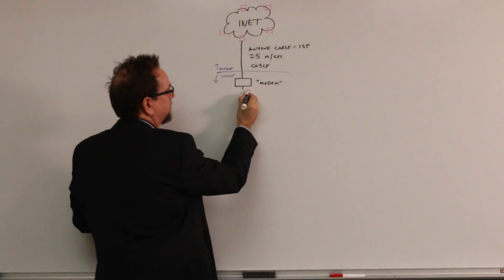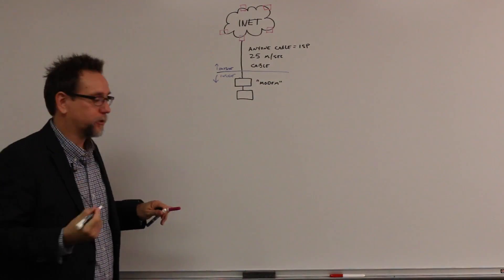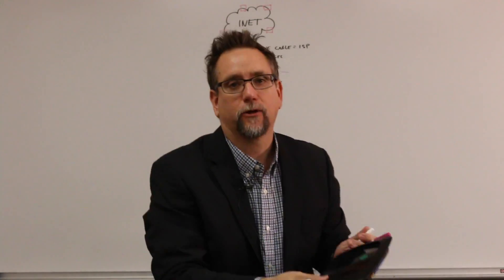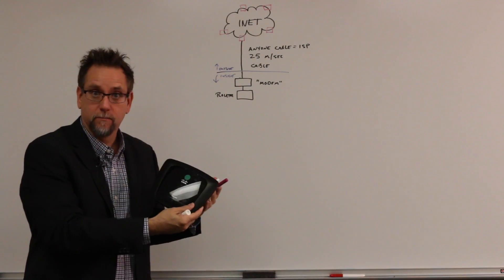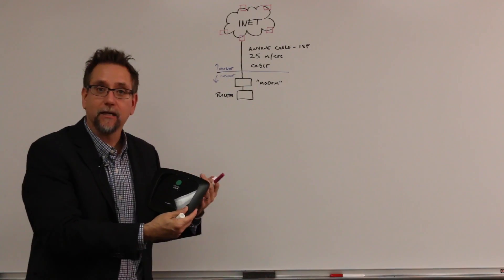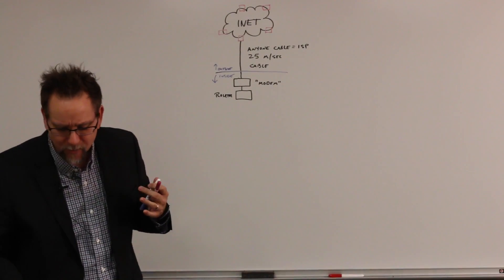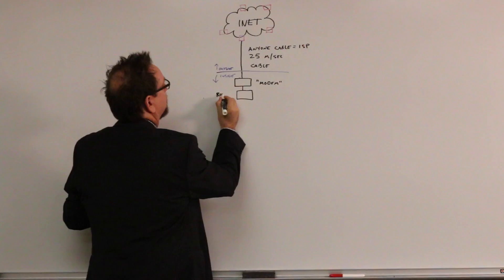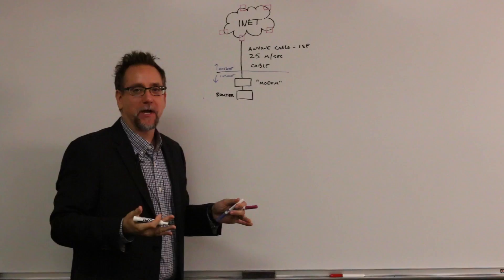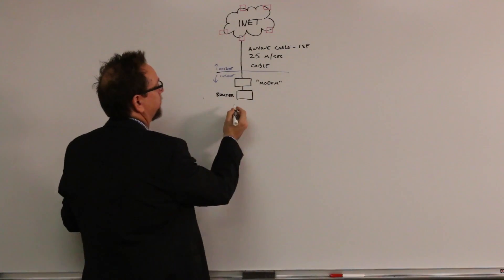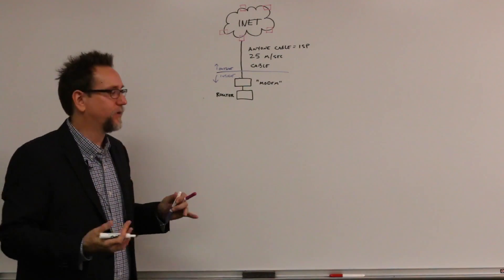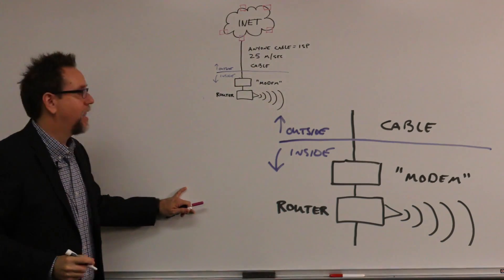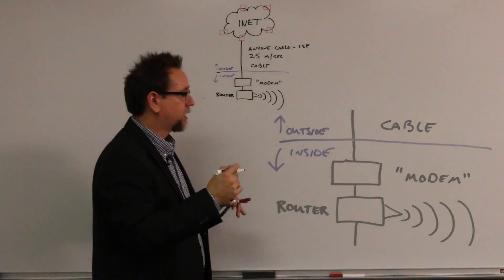Our next device is our router. I'm going to pick up the class router — this is a consumer-grade router, and we did that on purpose because many libraries only have this sort of thing. It's also surprisingly complex inside with lots of configuration options we'll get to later. Our router also has another very important function: it includes a Wi-Fi access point, which we'll draw as a little radio antenna. The Wi-Fi access point serves wireless devices.